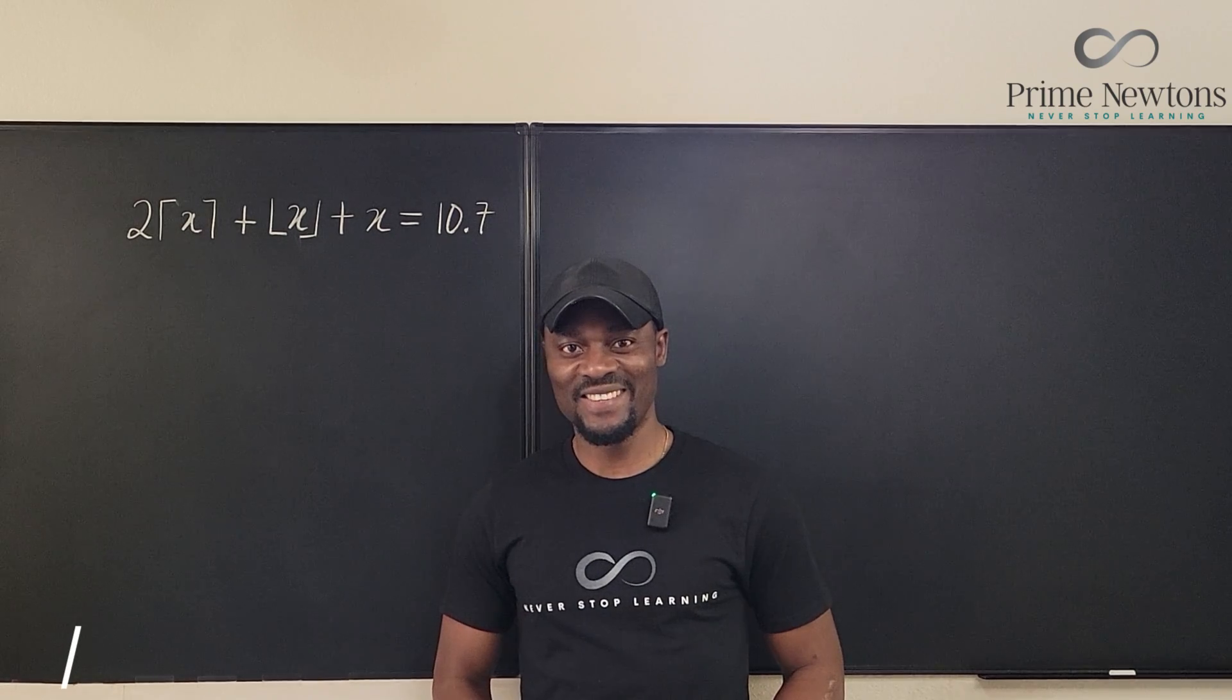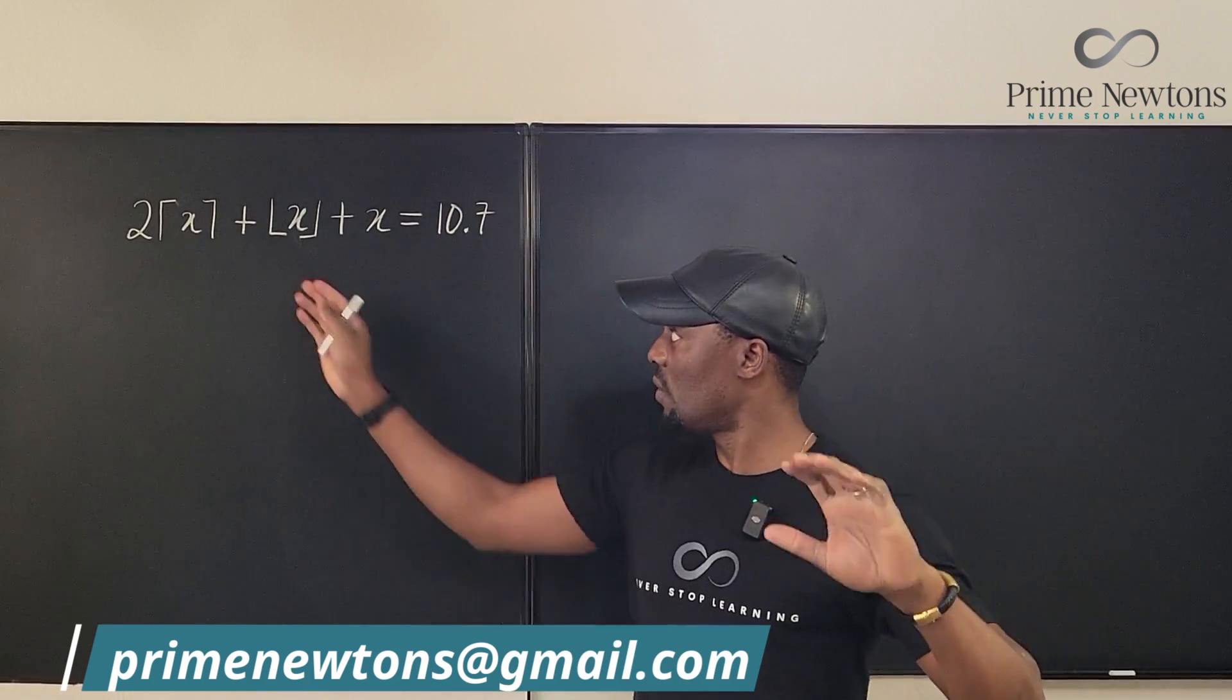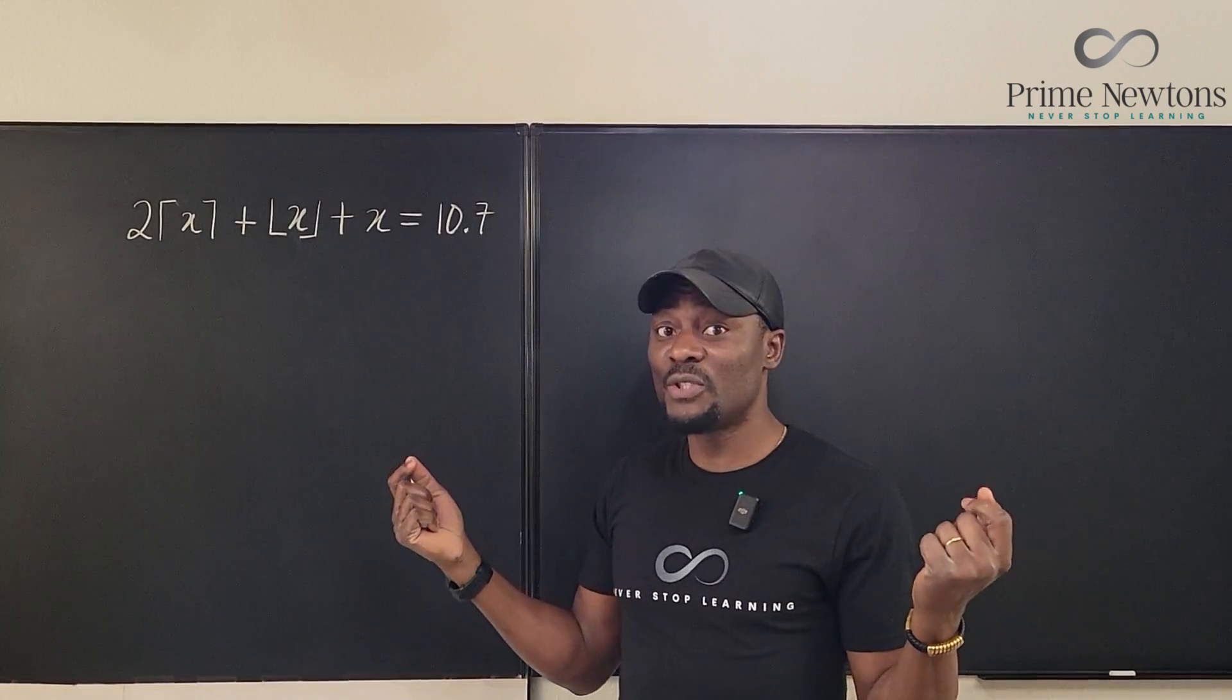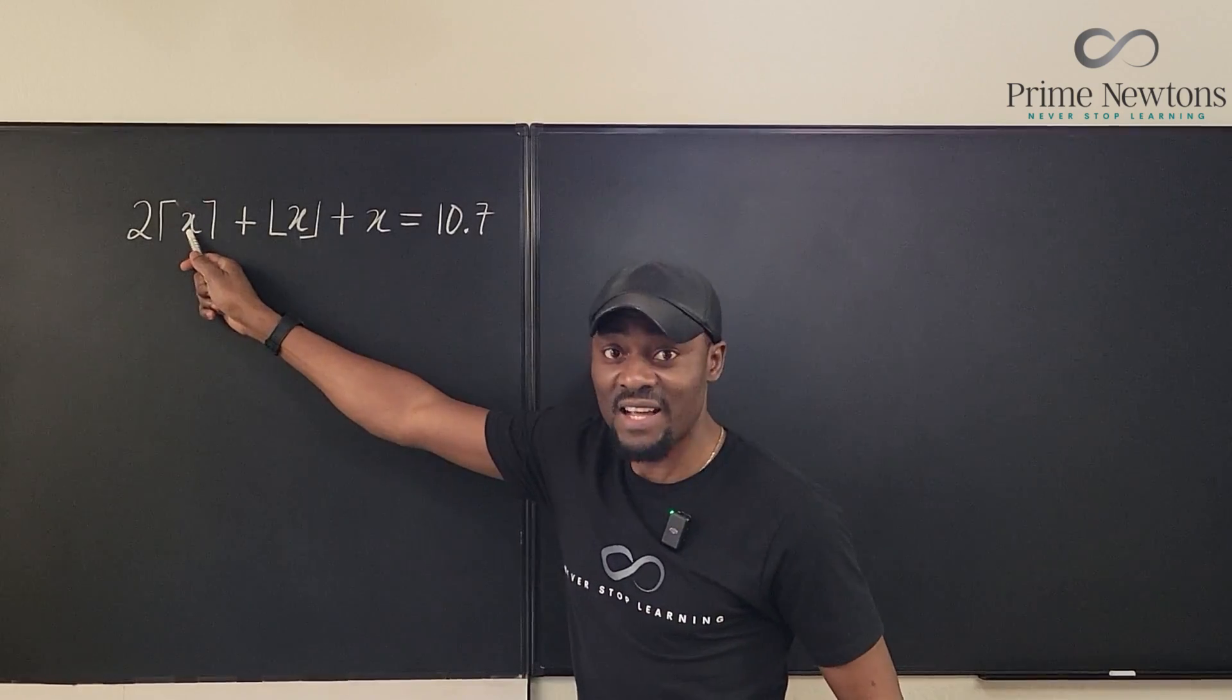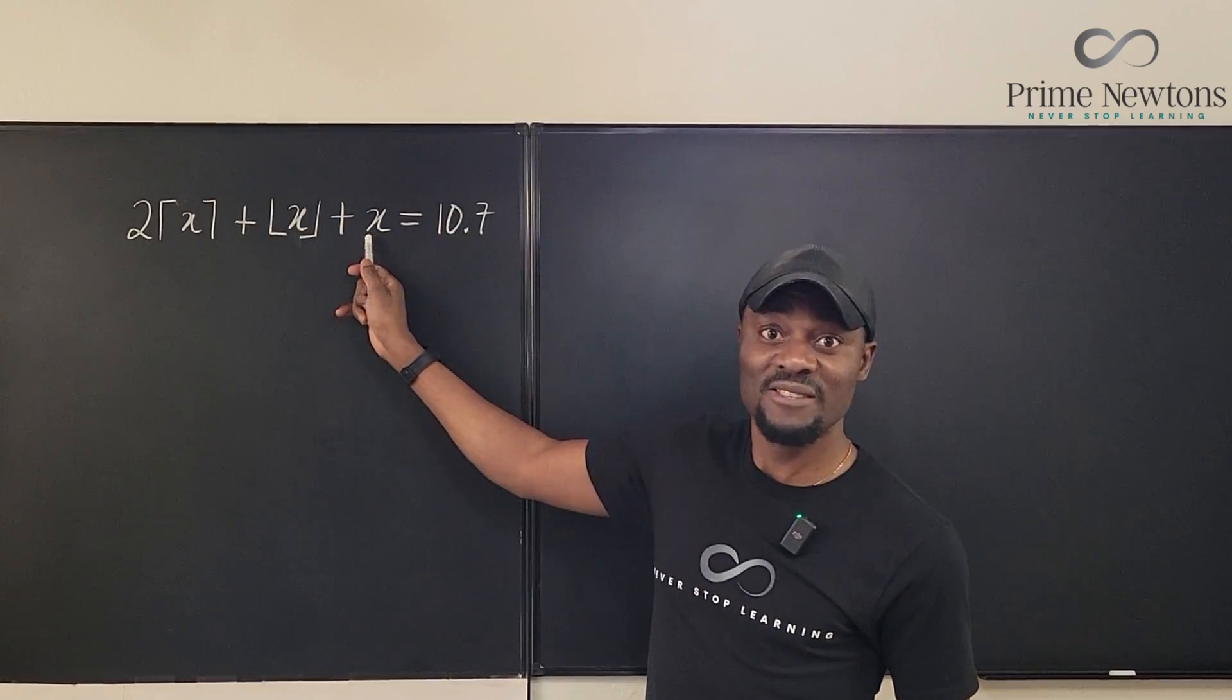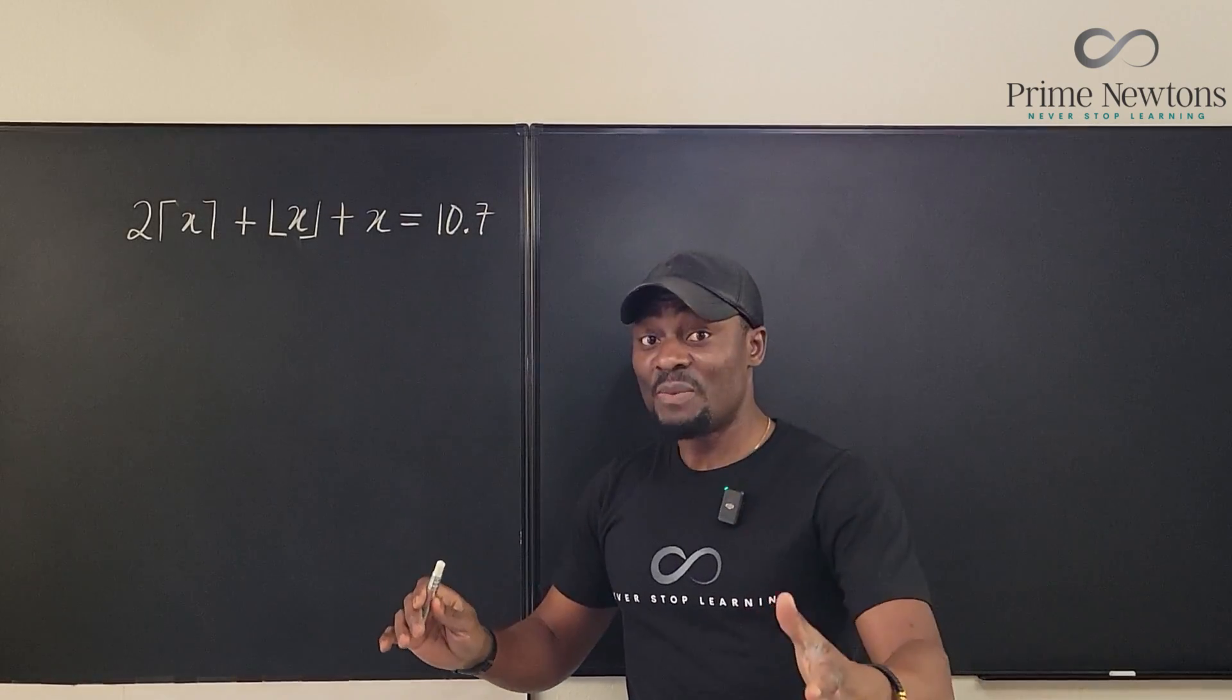Welcome to another video. This is an equation combining the ceiling function with the floor function and a regular function, and we're supposed to find what X is. Everything added together is going to be 10.7. This is going to be super easy.